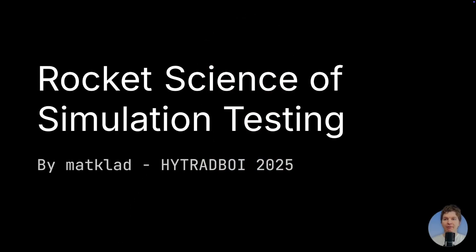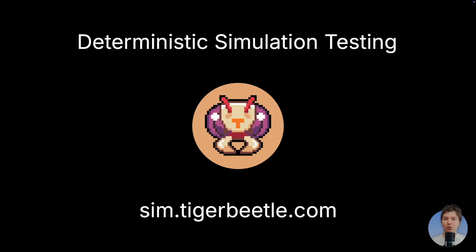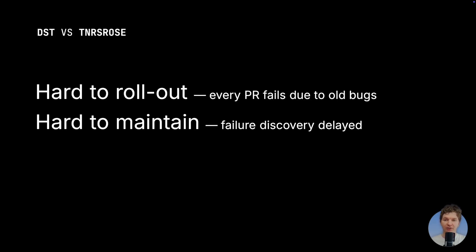As far as this talk is concerned, coverage-guided fuzzing, property-based testing, and deterministic simulation testing are all just different names for the same thing, and I'll be using the terms interchangeably. I also assume that you already know these techniques and won't be explaining them. I also assume that you're already following the not-rocket-science rule of software engineering: your CI system advances the tip of the main branch to a new commit hash only when that specific hash passed all the tests. The problem is connecting the two together, because deterministic simulation testing takes time to discover failures — it is a poorer fit for a GitHub Actions-shaped CI pipeline that simply gates pull requests before they get into main. A new kind of infrastructure is needed.